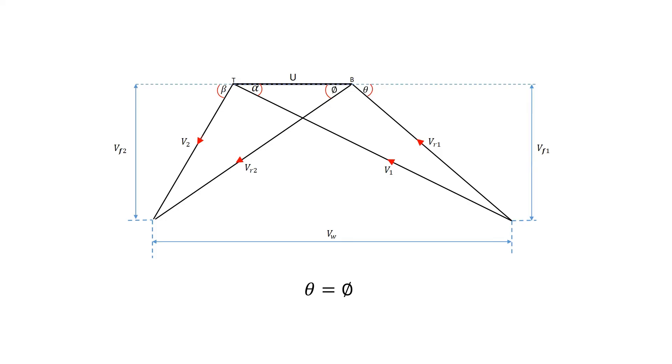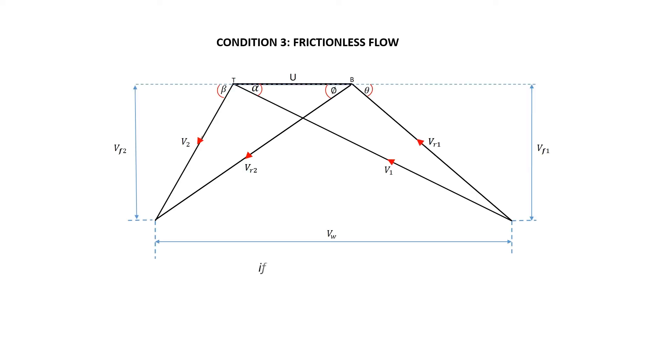Condition three is when we have a frictionless flow. Frictionless flow without shock on the blades means that the coefficient of friction K equals one or is at 100 percent. Therefore, relative velocity Vr2 equals relative velocity Vr1, which is derived from the formula: Vr2 equals K times Vr1.